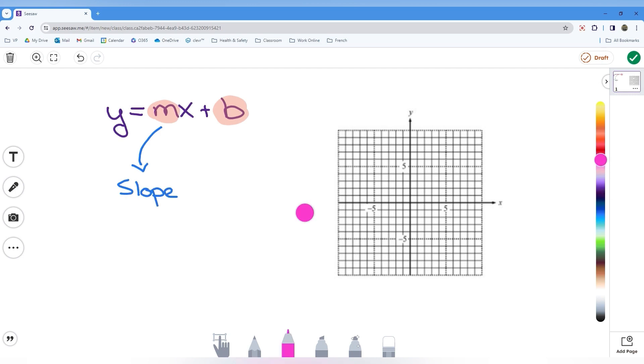b is new today. And what b represents is the y-intercept. The y-intercept is where it crosses this y-axis. Once again, our y-axis is this vertical axis that we see running down the middle of this graph.